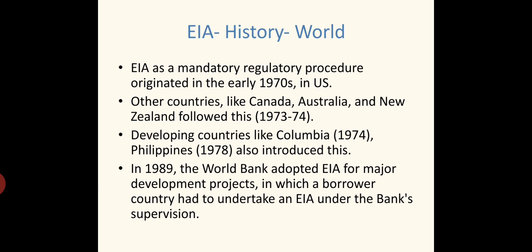Now, coming to the history of EIA. EIA as a mandatory regulatory procedure originated in the early 1970s in the US. Then other countries like Canada, Australia, and New Zealand followed in 1973–74. Developing countries like Colombia started in 1974, and the Philippines introduced it in 1978. In 1983, the World Bank made EIA mandatory for major development projects in which the borrower country had to undertake an EIA under the bank's supervision to receive financial aid.